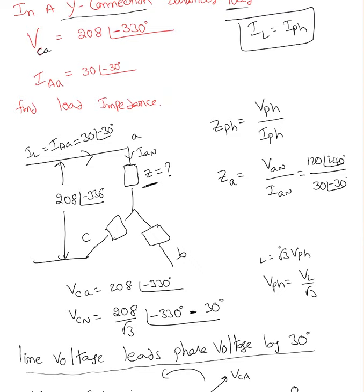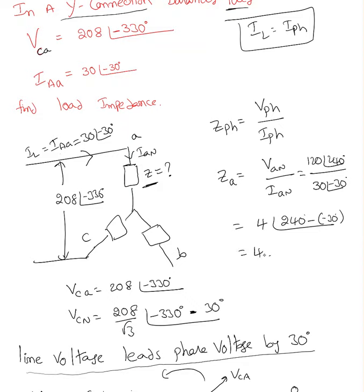What is the impedance? Impedance equals 120 over 30, which is 4 at an angle of 240 minus minus 30 — which is 4 at an angle of 270 degrees. When I convert this into rectangular format, it is 0 minus J4. So the line impedance is 0 minus J4 ohm.